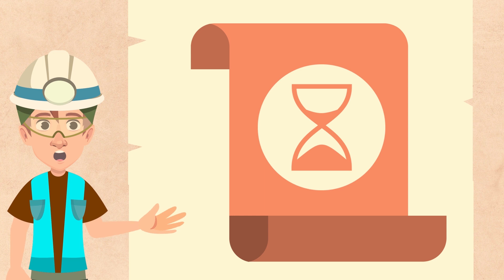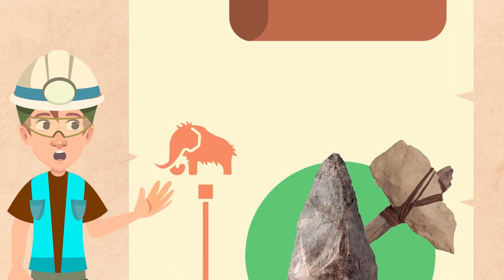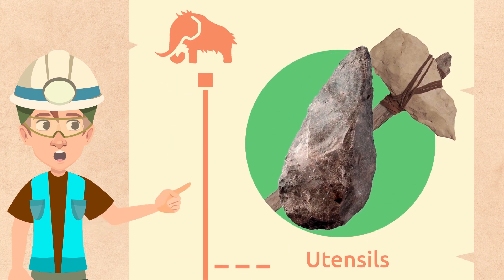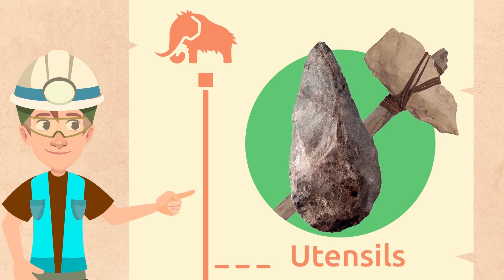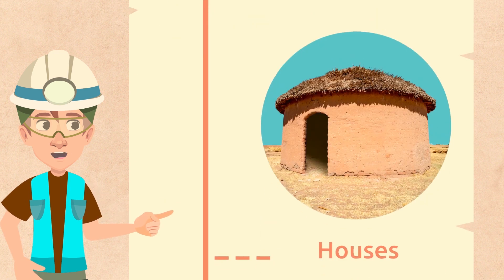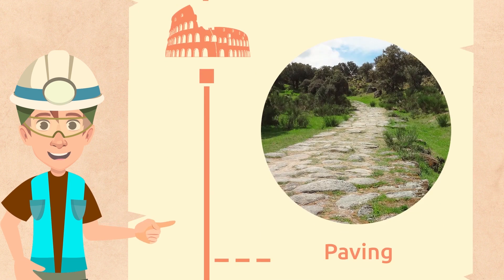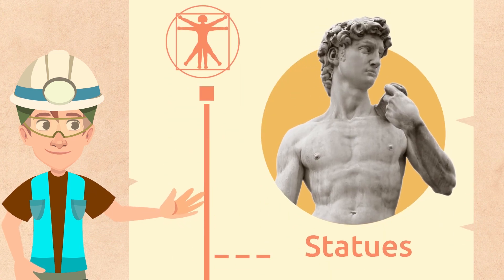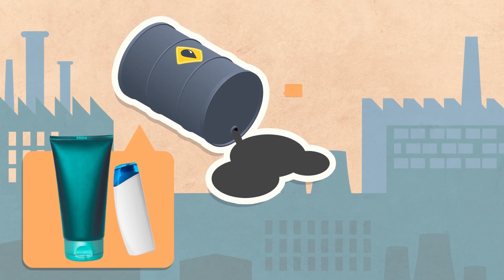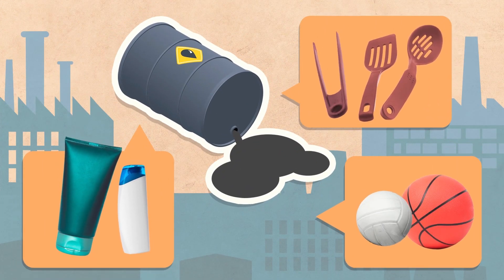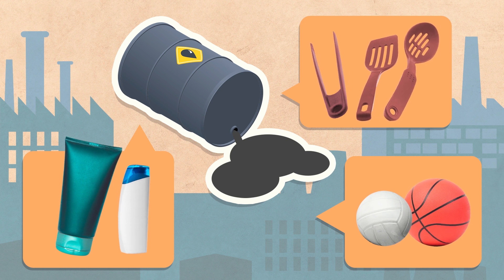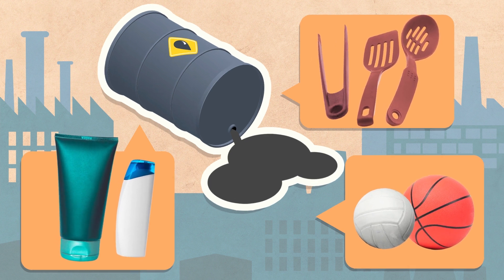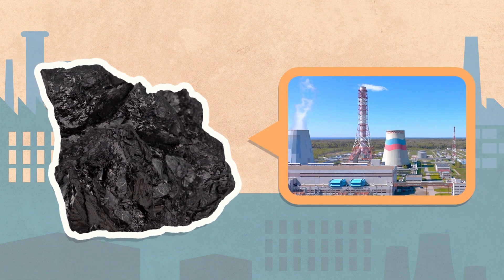Since prehistoric times, people have used rocks for a number of things, like making utensils, building their houses, paving, or even sculpting beautiful statues like this one. Nowadays we use petroleum in different industries for making plastics, or coal to generate electric power.